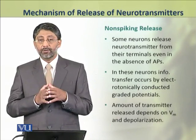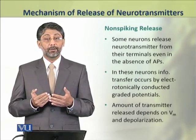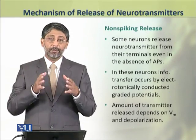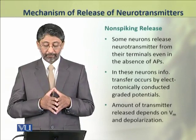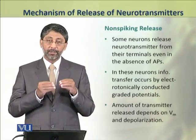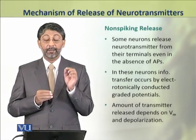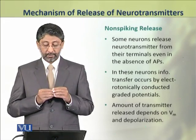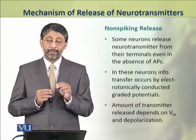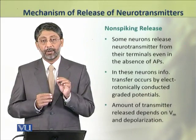Some neurons do not generate action potentials at all, but neurotransmitter release still occurs at their axon terminals. Such release is called non-spiking release. In these neurons, the information transfer occurs by electrotonically conducted graded potentials. In this case too, the amount of transmitter released depends on the membrane potential and depolarization.